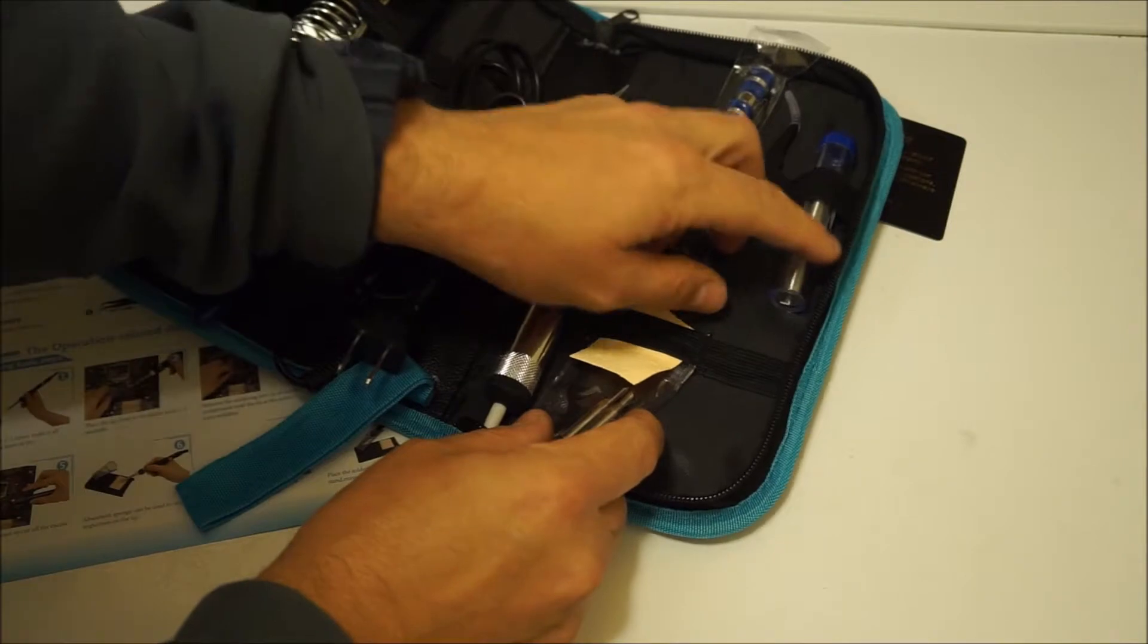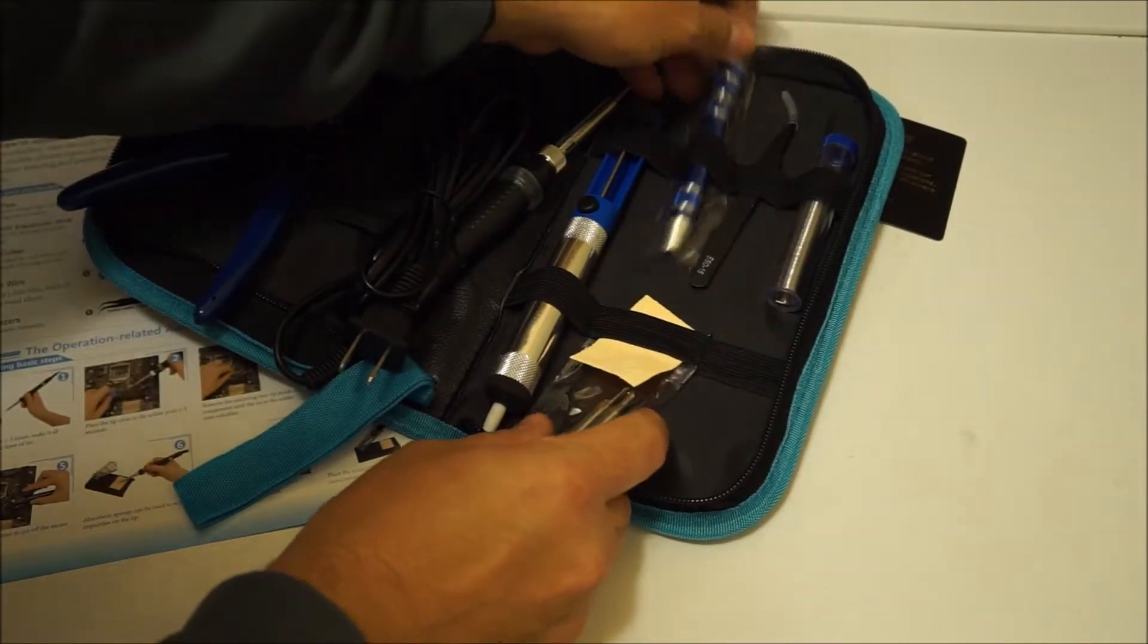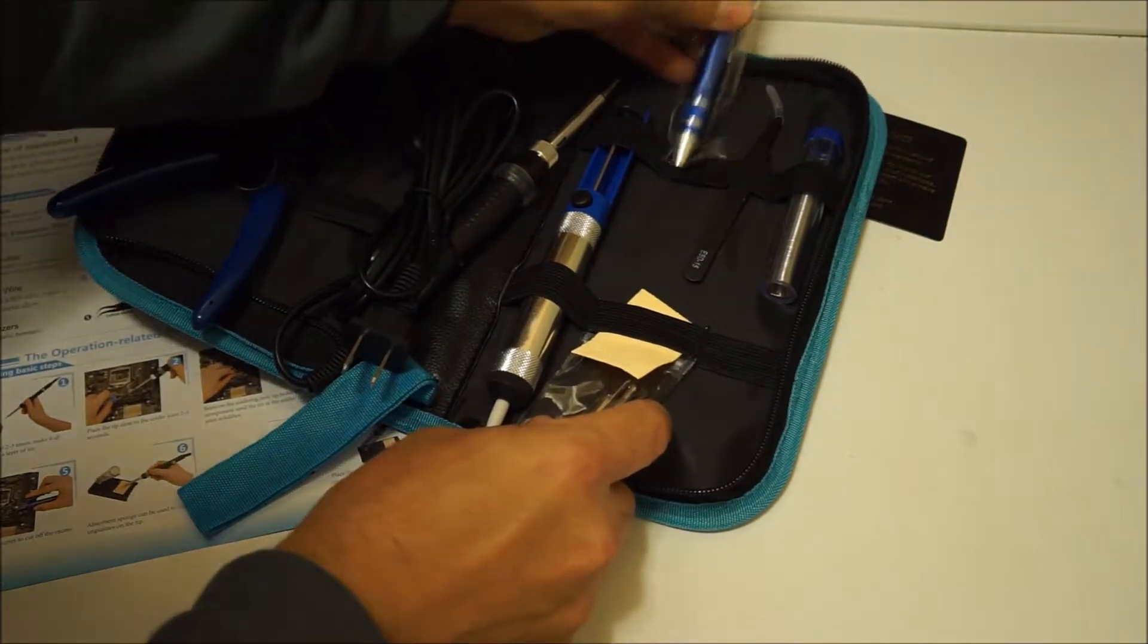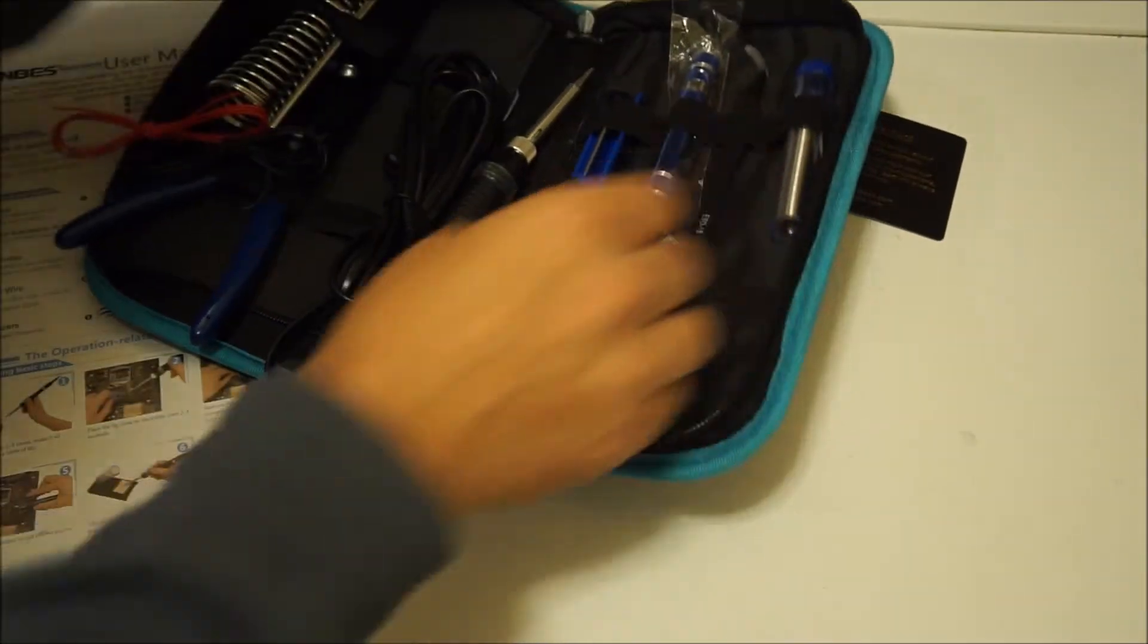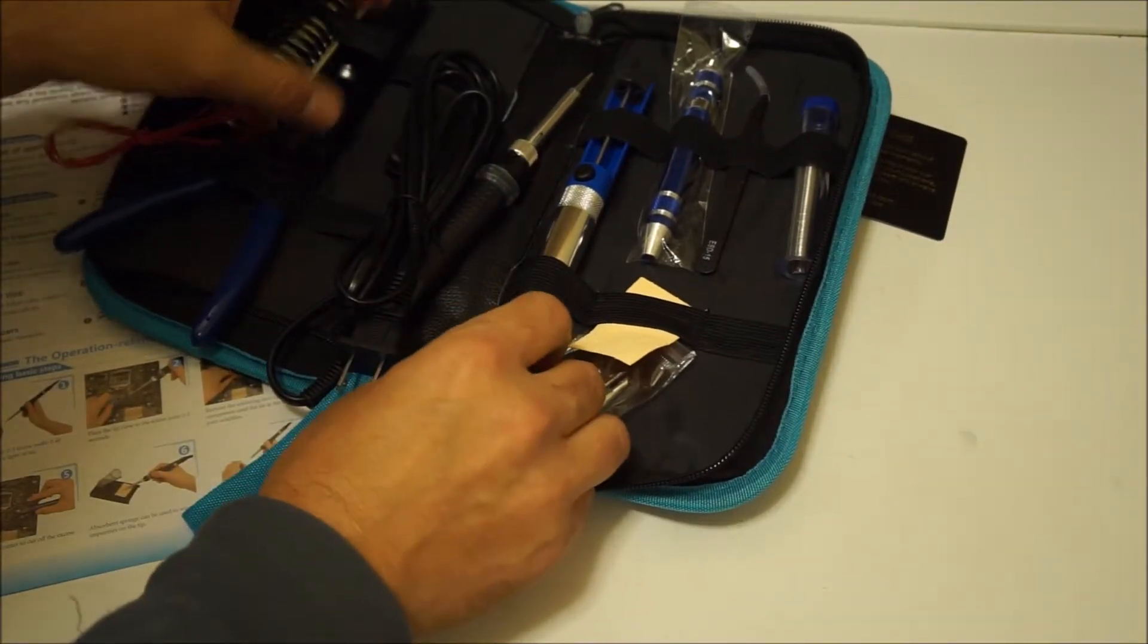You get a little bit of wire, some tips here, some solder, a little screwdriver. Sounds like the screws are inside the handle there. Tweezers, solder sucker.